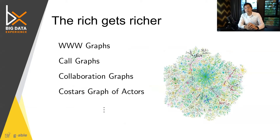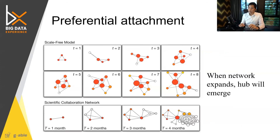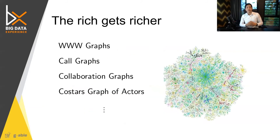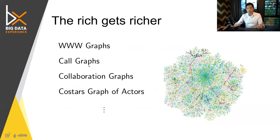Preferential attachment, or as it is otherwise named, is called the scale-free model. In the scale-free model, once the network expands, the new node would attach to the hub. This can be seen in different types of networks, like the worldwide web graph, the core graph, call graphs in a telecom company, collaboration graphs, and the actor graph.